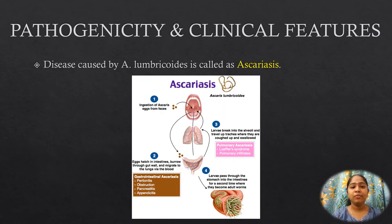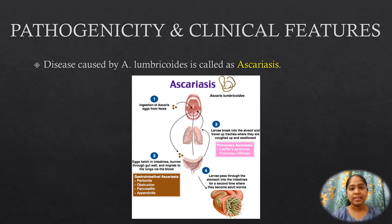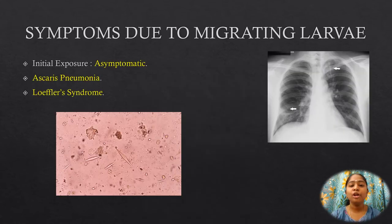Pathogenicity and clinical features. The disease caused by Ascaris lumbricoides is called Ascariasis. Clinical manifestations can be caused either by the migrating larva or by the adult worm itself. The pathogenic effects of larval migration are due to allergic reaction and not the mere presence of the larva.